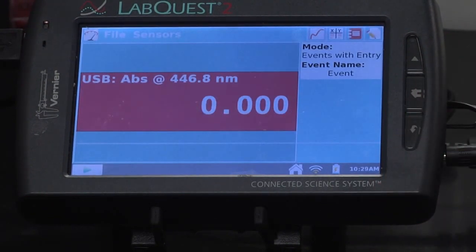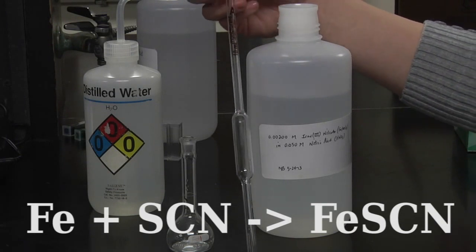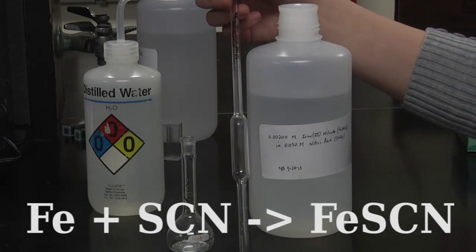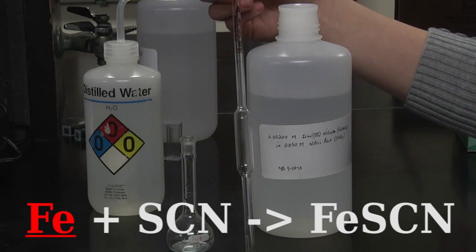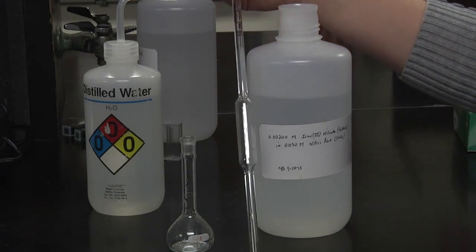Now we are doing part one of the procedure and making our dilute iron solution. Right here I have a 10 milliliter volumetric pipette and I'm going to be filling it with 0.002 molar iron nitrate. Fill it to this line, the calibration mark.